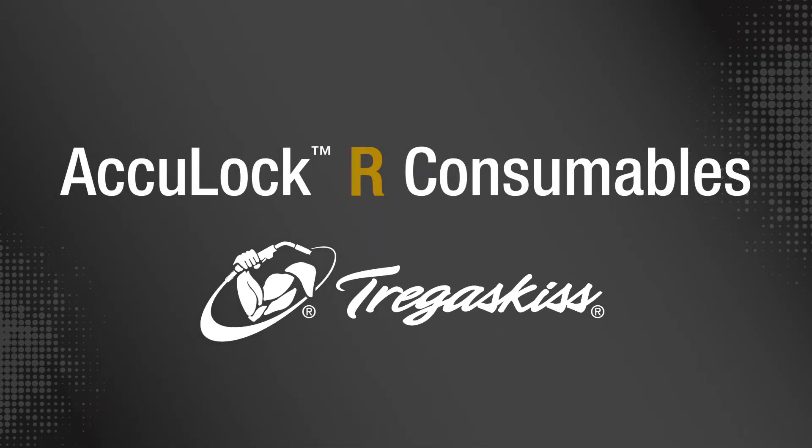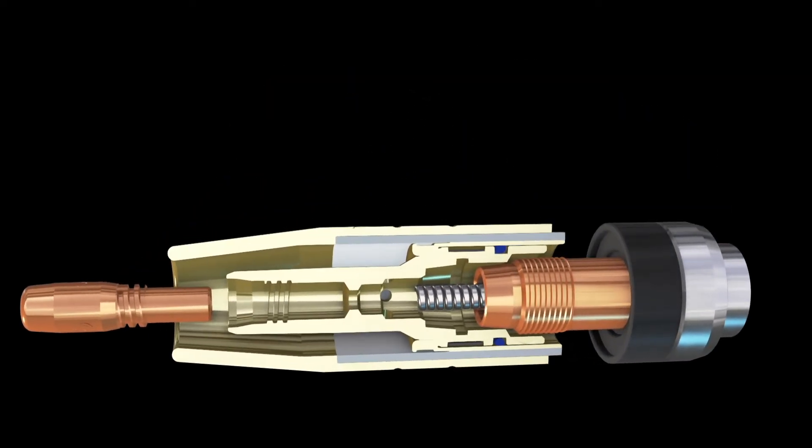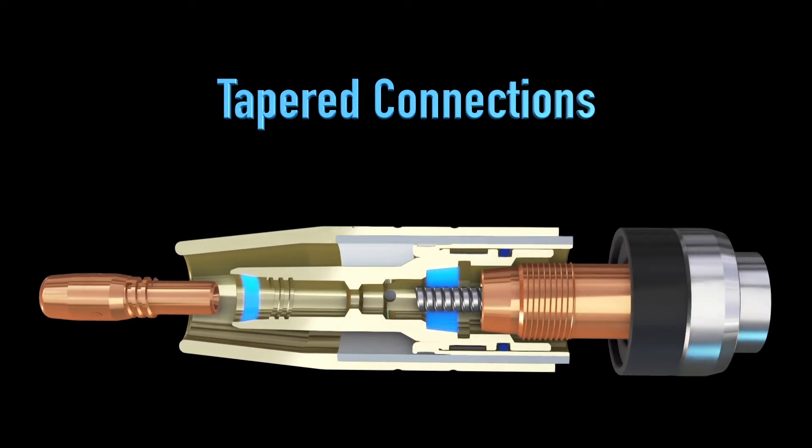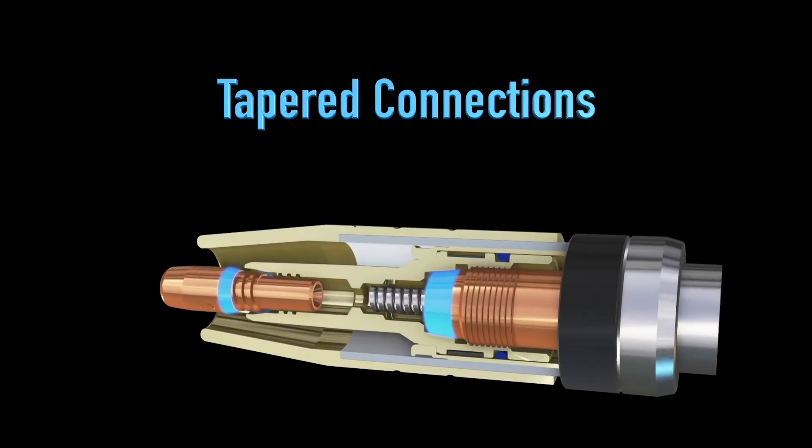Tregaskiss AccuLock R Consumables. AccuLock R Consumables were designed for longer life and quick, accurate replacement while maintaining the proven conductivity and locking benefits of tapered connections.